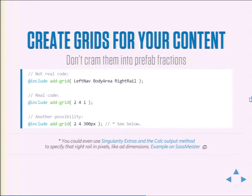You can create grids for your content. For example — not real code — `add-grid: left-nav body-area right-rail` with multipliers 2, 4, and 1. That's what you need for your layout.